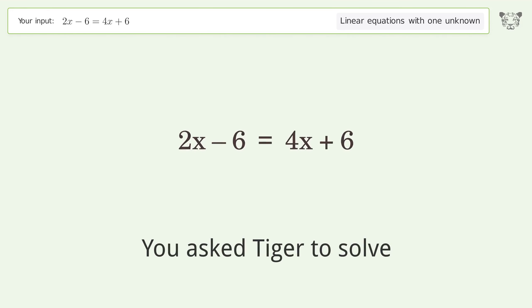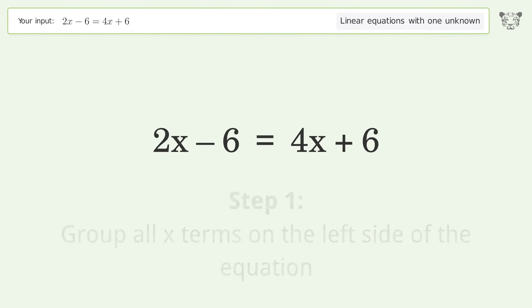You asked Tiger to solve this. This deals with linear equations with one unknown. The final result is x equals negative 6. Let's solve it step by step. Group all x terms on the left side of the equation.